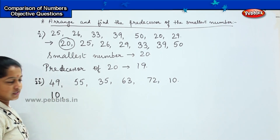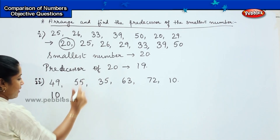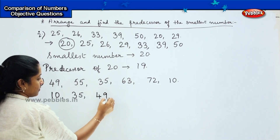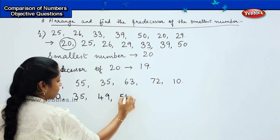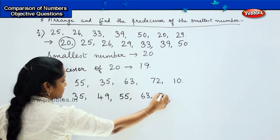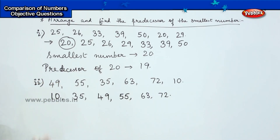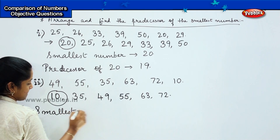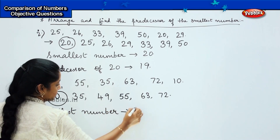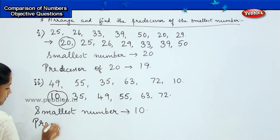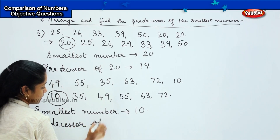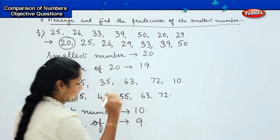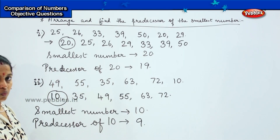After 10, which is the next smallest number? It is 35, right? So: 35, then 49, then 55, afterwards 63 and 72. Which is the smallest number? My smallest number is 10. The predecessor of 10 is the number which comes before 10 — it is 9. So my answer is 9. Is it clear? This type of tricky question is interesting!